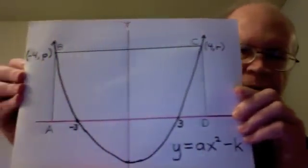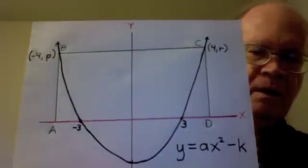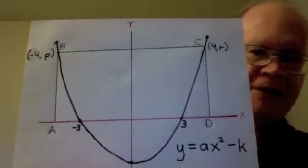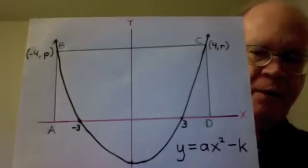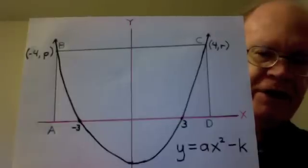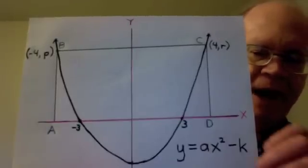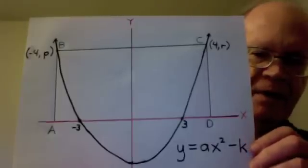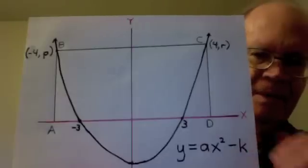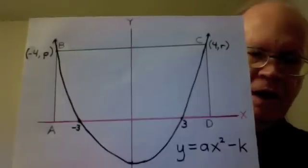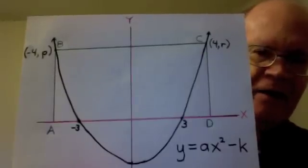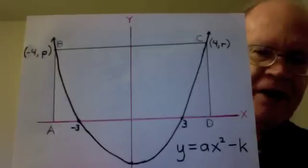Here is the challenge. We have the x-axis and the y-axis, shown in red. We have a curved graph. Its equation is y equals ax squared minus k, where a is a constant and k is a constant. A, B, C, D is a rectangle. Its area is 40 square units.